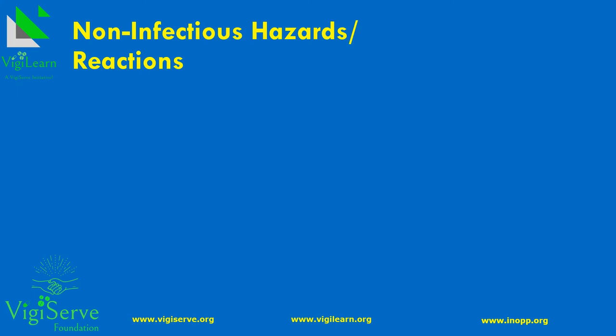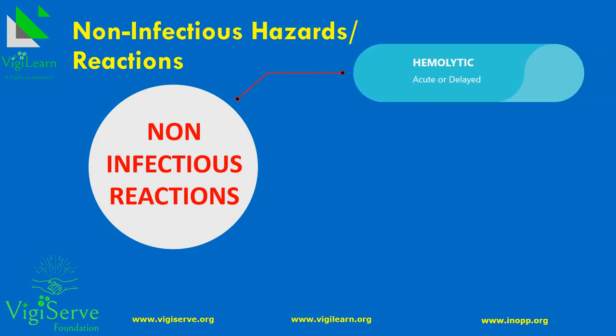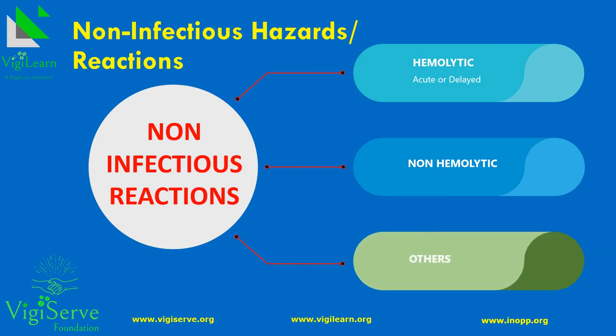Non-infectious transfusion reactions include hemolytic, non-hemolytic, and other reactions. Hemolytic reactions may be either acute or delayed. The non-hemolytic reactions may include allergies, fever, hypotension, or other serious transfusion-associated reactions. Other transfusion reactions include increased blood potassium or ferritin levels. Besides, we can even have unclassifiable complications of transfusion.